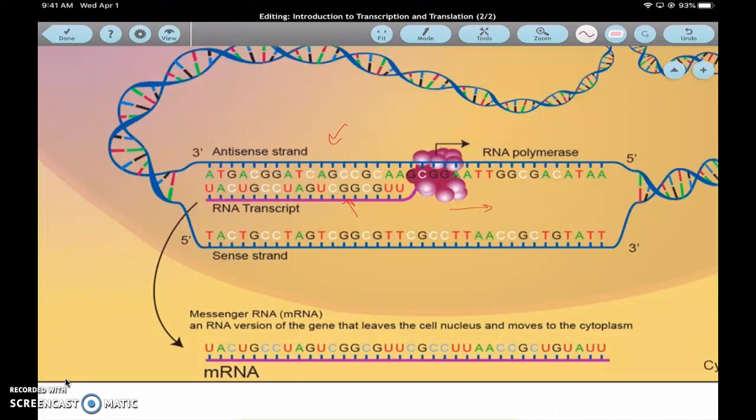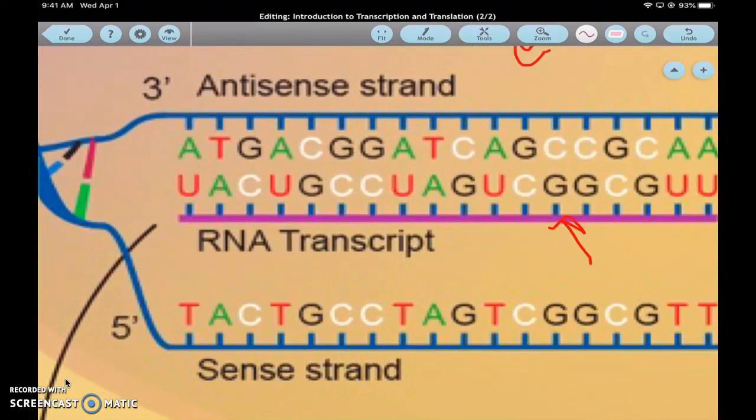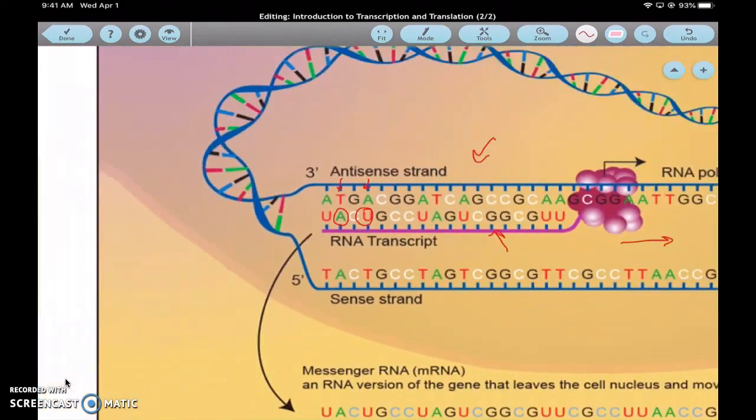So you can see on the DNA, here's a T, and the RNA knows to put an A. Here's an A in your DNA, and there's the U instead of the T. So that's one thing you need to know.